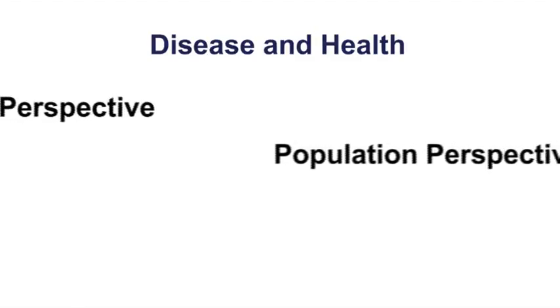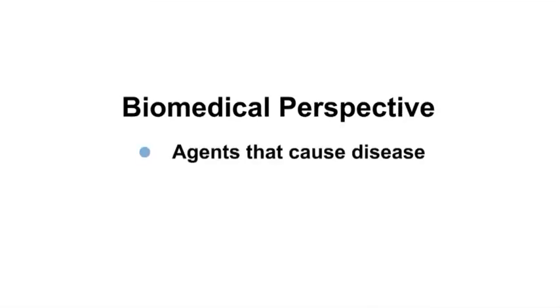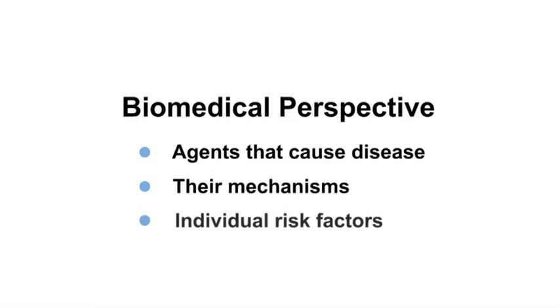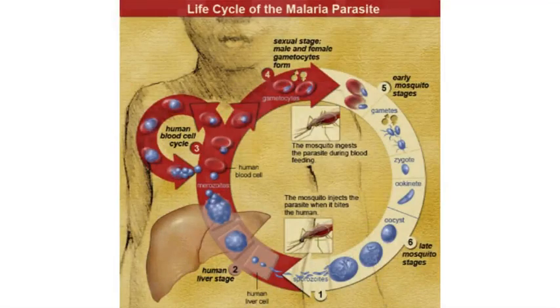Let's now briefly discuss two different perspectives on disease and health: the biomedical perspective and the population perspective. The biomedical perspective focuses on biological factors, such as specific agents that cause disease and their mechanisms. It focuses on individual risk factors for health outcomes and does not include social and environmental factors. Researchers and clinicians observe and measure the events that occur sequentially in someone's body when they come into contact with a disease agent or exposure.